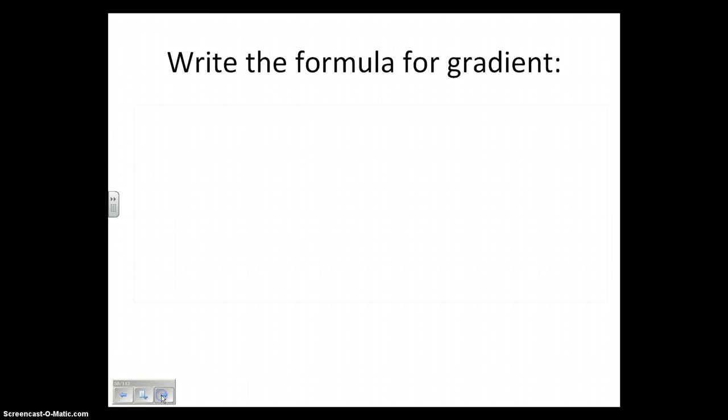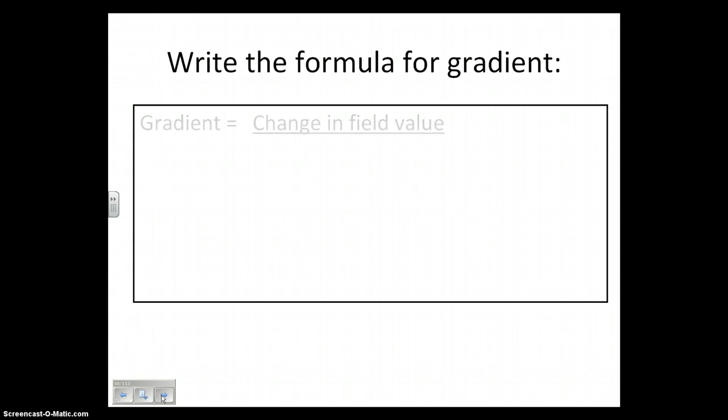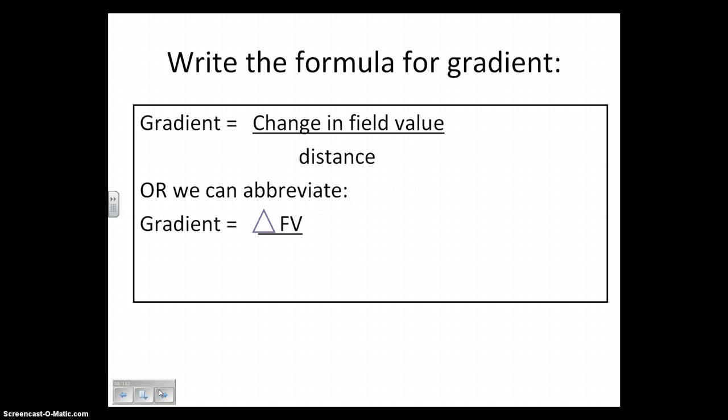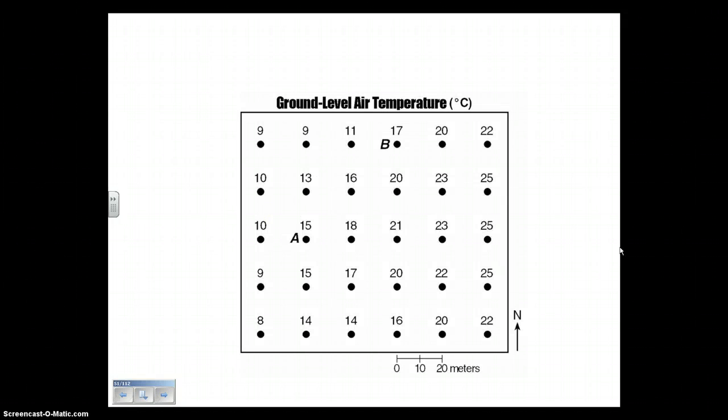The formula for gradient - let's write it out. It's that change in field value over distance. That triangle that you see there means delta, and delta means change. FV is field value, and on the bottom we have lowercase d for distance. Remember, you always WSS - write your equation, substitute in your values, and then solve. Don't just jump to solve. You need to set up your equation first to make sure you have your values all correctly put together.